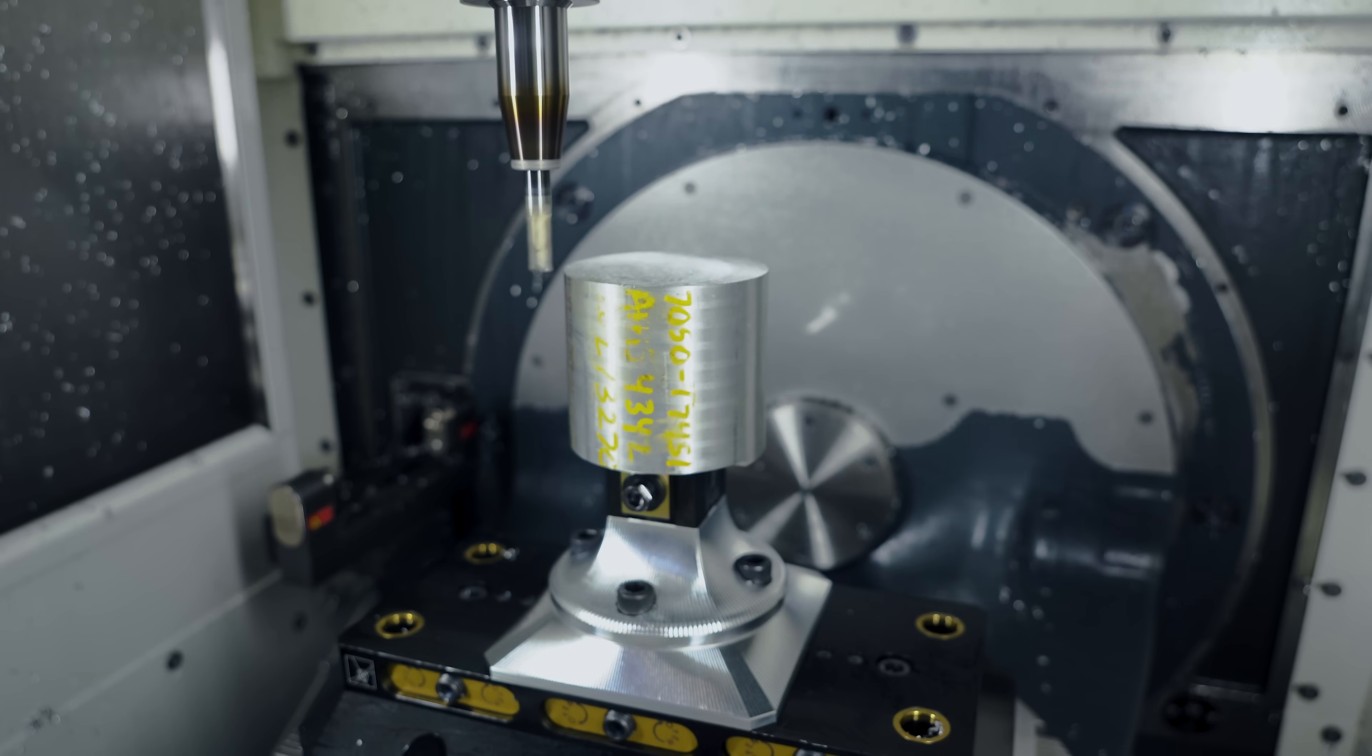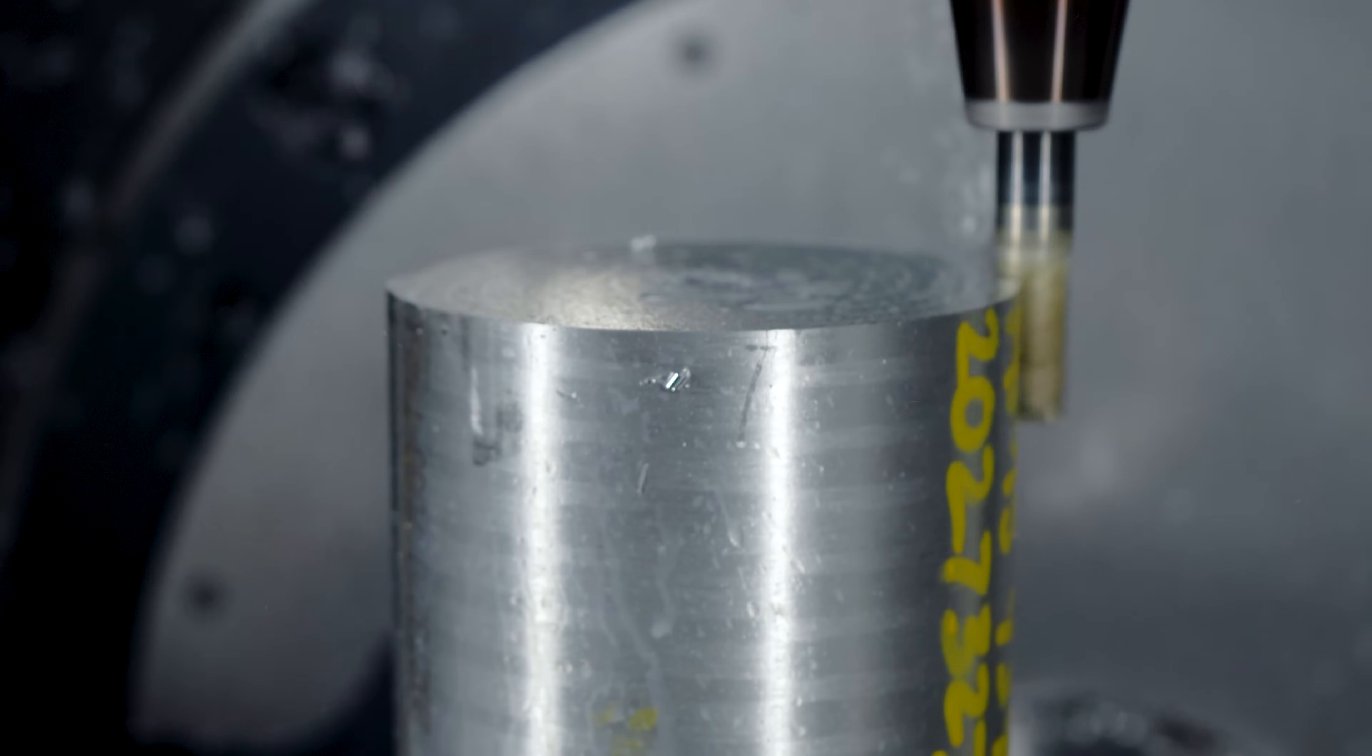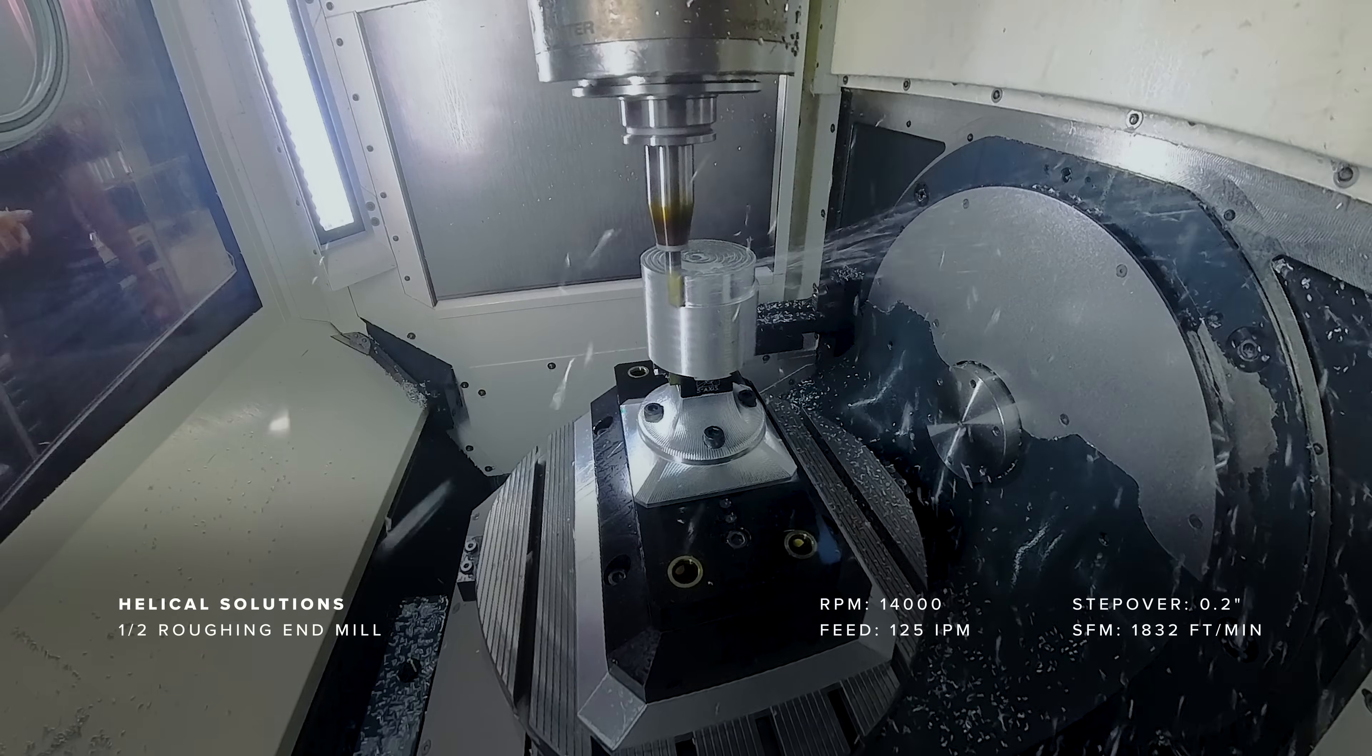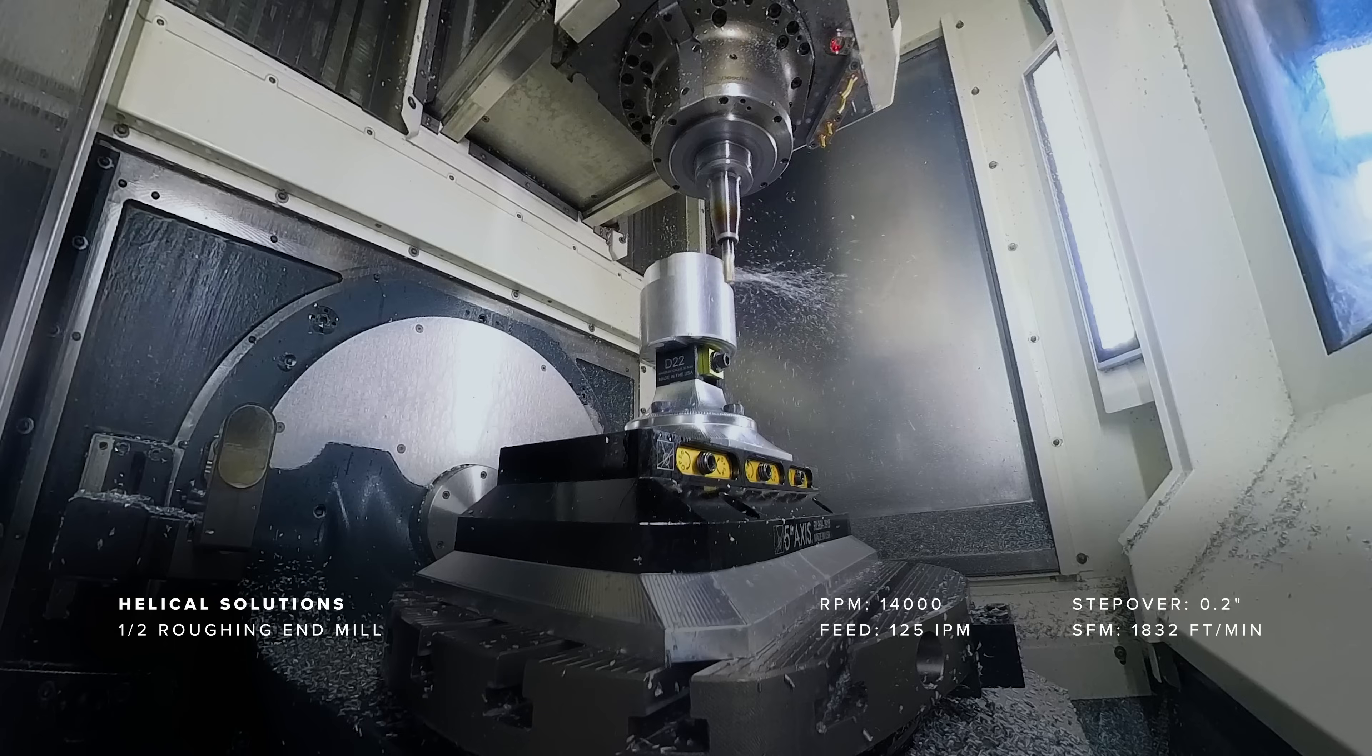In this operation we rough and finish all the outer surfaces including the bottom of the part. That way all the critical surfaces and print datums are machined in one go.